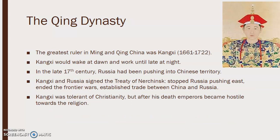The greatest ruler in Ming and Qing China was Kangxi, from 1661 to 1722. He would always wake up at dawn and work late into the night. In the late 17th century, Russia had been starting to push into Chinese territory, so Kangxi and Russia would sign the Treaty of Nerchinsk, which stopped Russia from pushing east, ended the frontier wars, and established trade between China and Russia. Kangxi was tolerant of Christianity, but after his death, emperors became very hostile toward that religion.